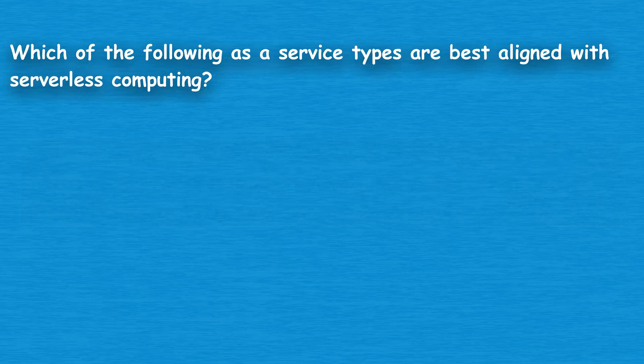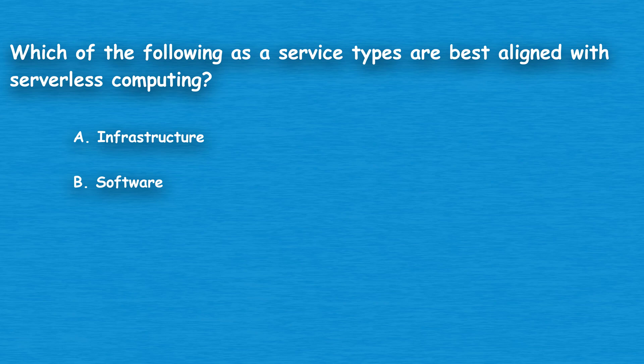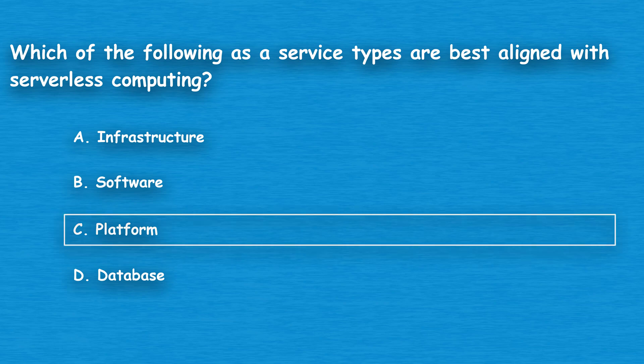Question number one: which of the following 'as a service' types are best aligned with serverless computing? Option A: Infrastructure. Option B: Software. Option C: Platform. Option D: Database. The correct answer is Option C, Platform.